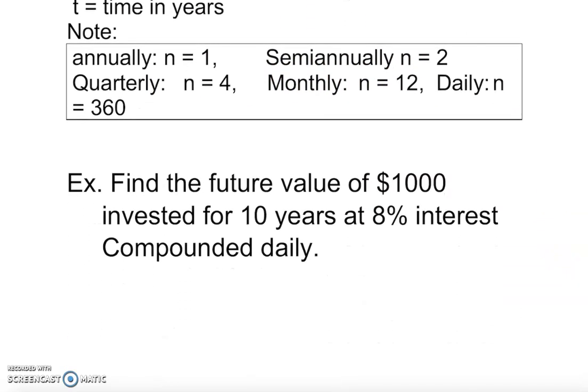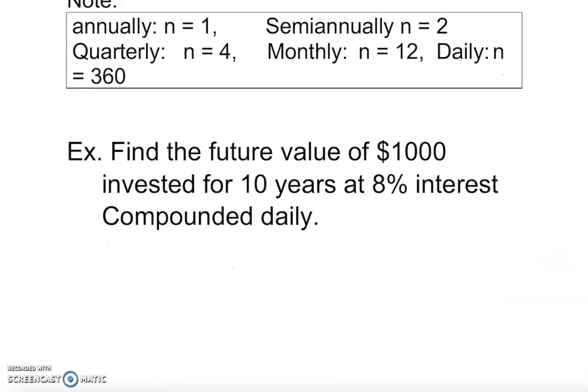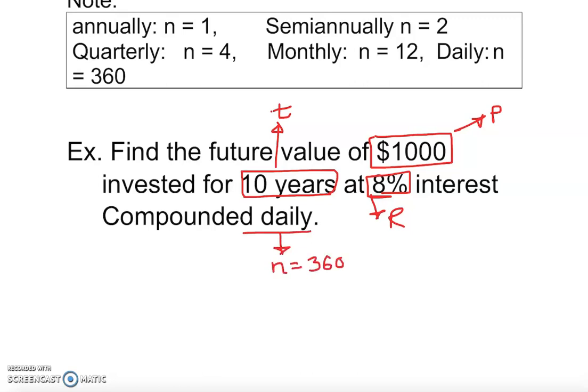Let's figure out which one is what and label it. So this is my P, that's my t clearly, and that's my rate. Compounded daily, so that's my n equals 360. Let's take a look - I don't think there's anything else given.